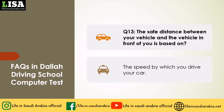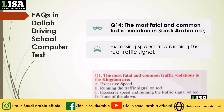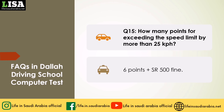Q13: The safe distance between your vehicle and the vehicle in front of you is based on? Answer: The speed by which you drive your car. Q14: The most fatal and common traffic violations in Saudi Arabia are? Answer: Excessive speed and running the red traffic signal. Q15: How many points for exceeding the speed limit by more than 25 km/h? Answer: 6 points plus SAR 500 fine. Q16: How many points for driving at a check post with more than 25 km/h speed? Answer: 4 points plus SAR 300 fine.